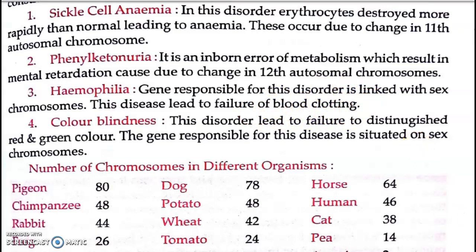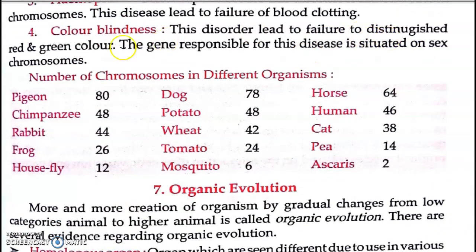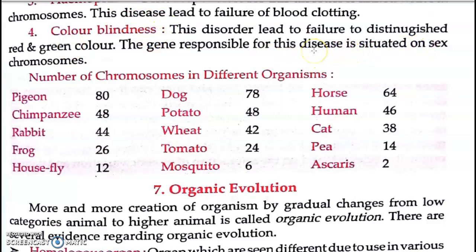Now moving on to color blindness. This disorder leads to an inability to distinguish red and green colors. The gene responsible for this disease is situated on the X chromosome — it is also an X-linked recessive disorder. Due to mutation in the gene on the X chromosome, the person cannot distinguish red and green colors. This is a genetically inherited condition passed from parents to children.